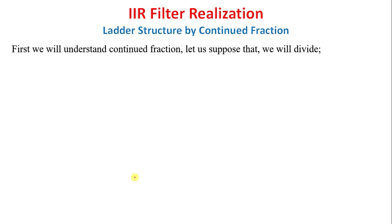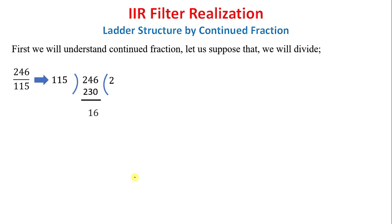पहले हम लोग continued fraction को समझते हैं। एक numerical value को लेकर, example के तौर पे 246 divided by 115। जब मैं 246 में 115 का भाग दूँगा तो क्या-क्या process होगा, चलिए देखते हैं। 115 और 246 — अब मुझको 246 को divide करना है 115 से। तो simply जैसे कि पहले divide किया था, 2 times गया, 230 आया। इसको subtract किया और remainder 16 आया। इस remainder 16 से अब हम फिर इस 115 को divide करेंगे।